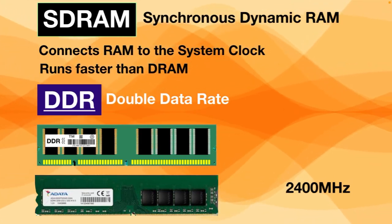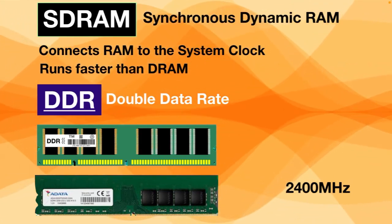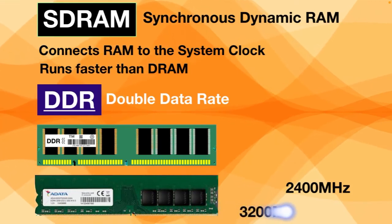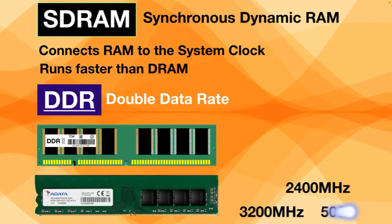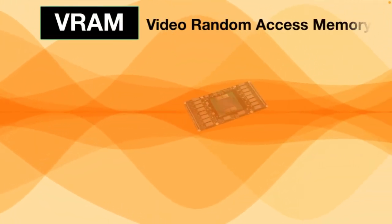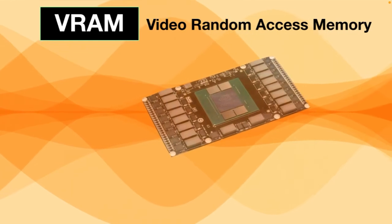If you want to get maximum performance out of your memory, you can get higher-clocked RAM ranging from 3200 MHz up to 5000 MHz. There is also VRAM — Video Random Access Memory — which is used in graphics cards to process graphical data.